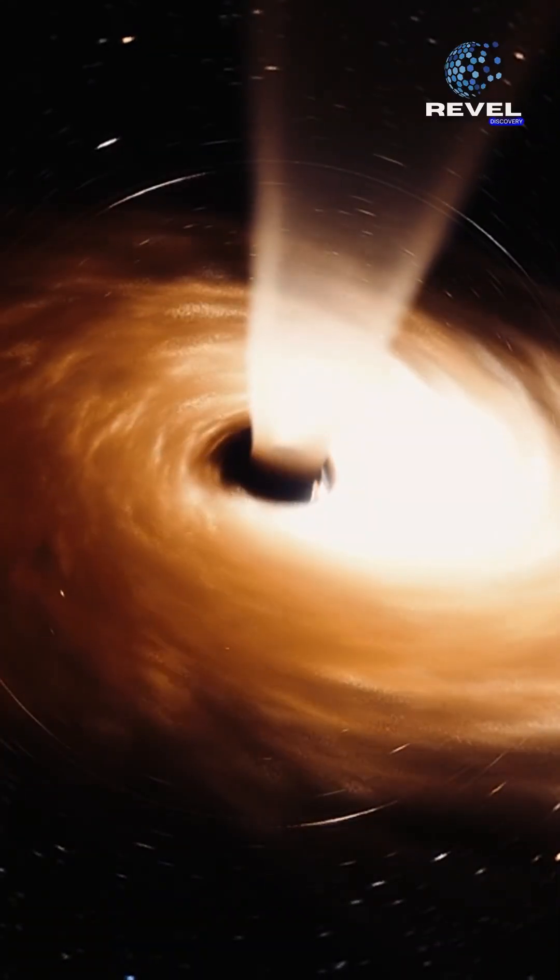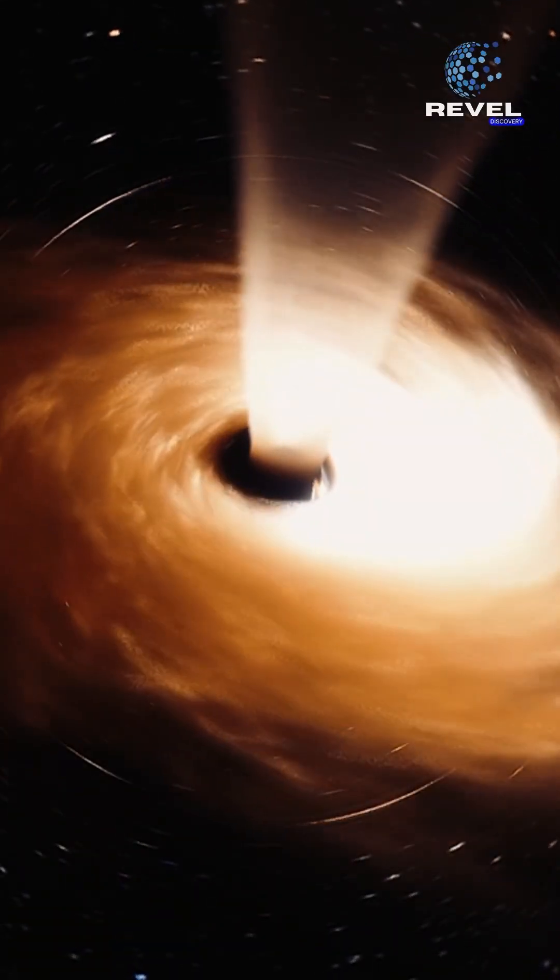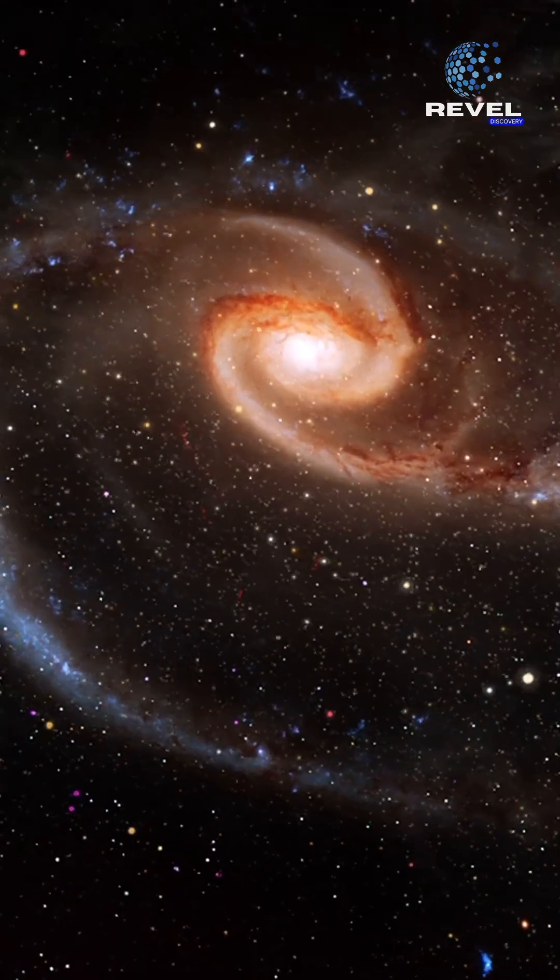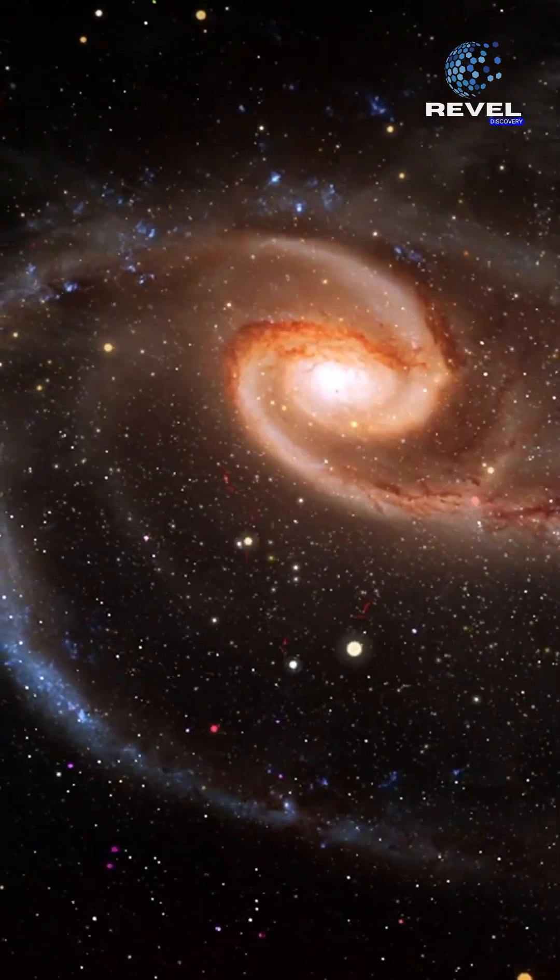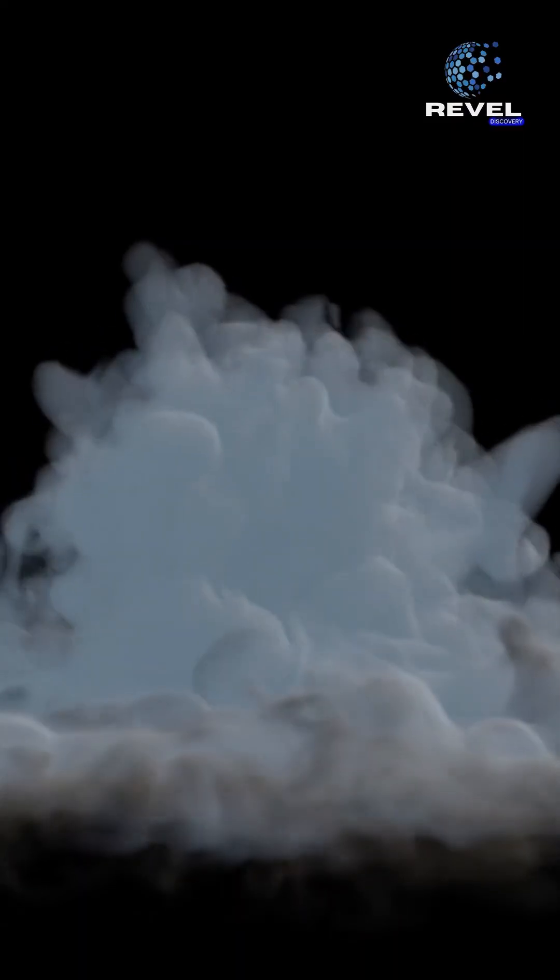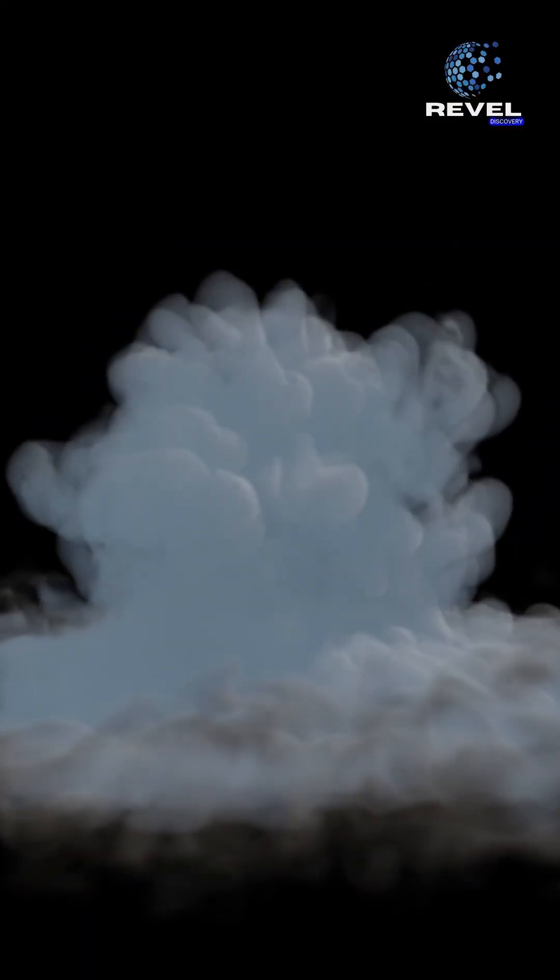The Boomerang Nebula derives its name from its unique boomerang-shaped appearance. Extending across 10 light-years, it results from the expulsion of gas from a dying star. As this gas expands, it rapidly cools down.